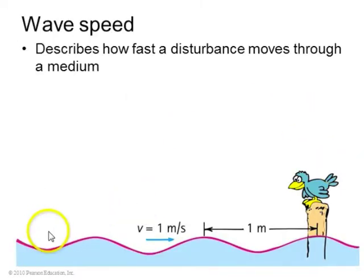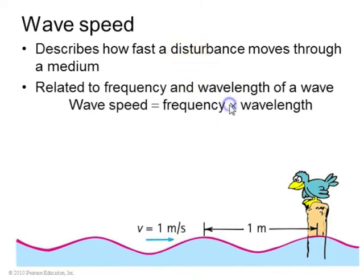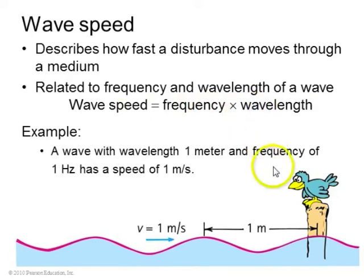Wave speed describes how fast the crests or the troughs move through a medium. That is related to the frequency and wavelength. Wave speed is the frequency times the wavelength. For example, here are waves where the wavelength is one meter. This bird standing here sees the water going up and down with a frequency of one hertz. So one hertz times one meter equals one meter per second.